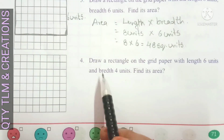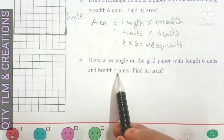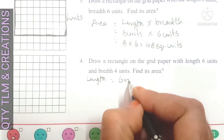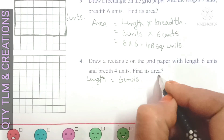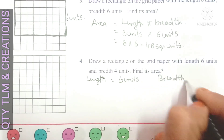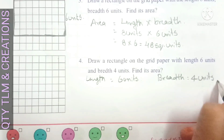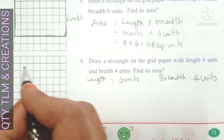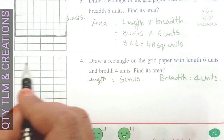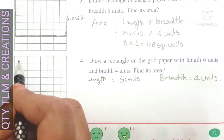Next question: draw a rectangle on the grid paper with length six units and breadth four units, and find its area. Length is equal to six units. We can take six units here: one, two, three, four, five, six. This is the length.